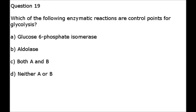Number 19. Which of the following enzymatic reactions are control points for glycolysis? A. Glucose 6-phosphate isomerase. B. Aldolase. C. Both A and B. D. Neither A nor B.